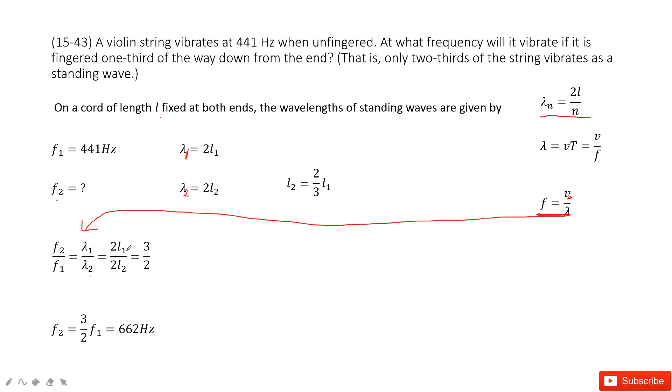Now we come to there, the lambda 1 is 2L1, lambda 2 is 2L2. The ratio for L1 and L2, so L1 over L2 is 3 over 2. In this one, we get the frequency for F2. In this function and input L1, we get final answer. Thank you.